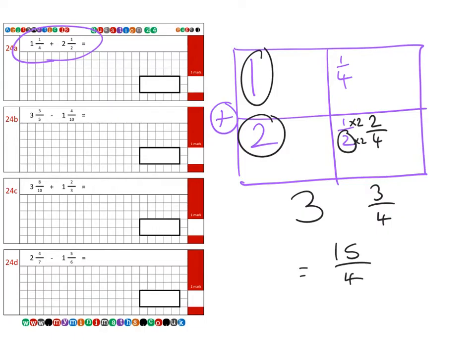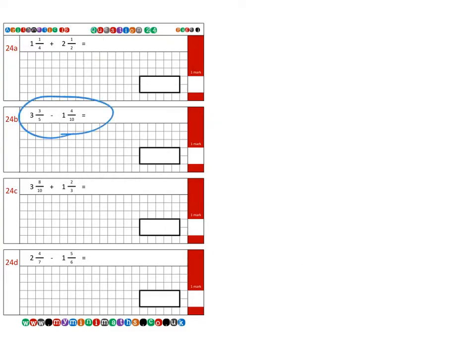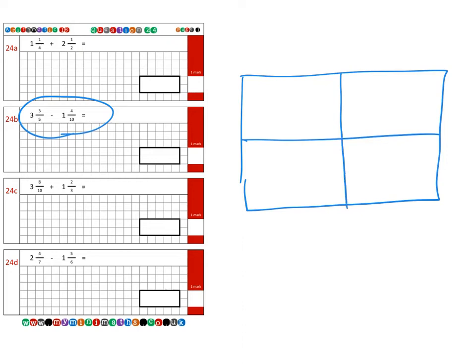Next we're on to question B. So here we go again with our box. It's 3 and three-fifths subtract 1 and four-tenths. Again, we're looking to make this five the same as the tenth, so we're going to times it by two to make ten.